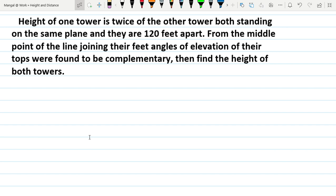The height of one tower is twice the other tower, both standing on the same plane and 120 feet apart. From the middle point of the line joining their feet, angles of elevation to their tops were found to be complementary. Find the height of both towers.